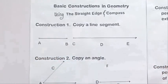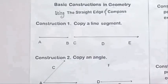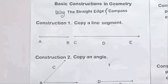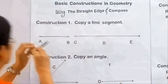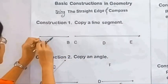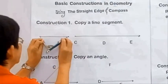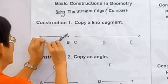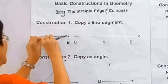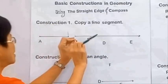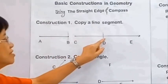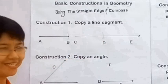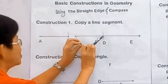First, we draw a ray CE and then measure the length of line segment AB using the compass. With the compass point on point A, we swing an arc to B and then copy this arc from point C, intersecting the ray CE at point D. So, AB is congruent to CD.